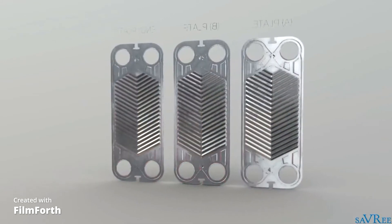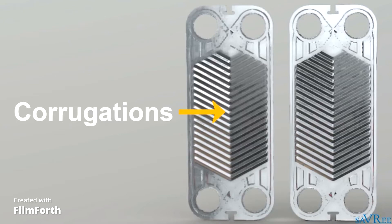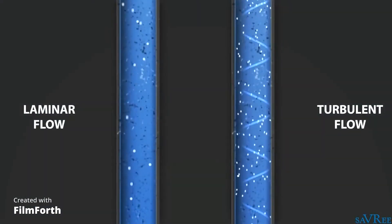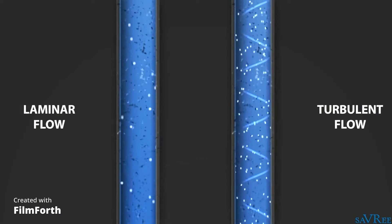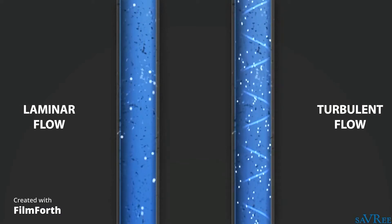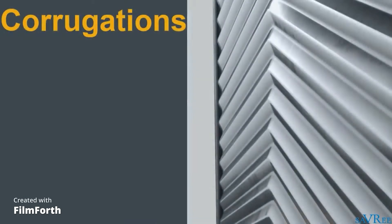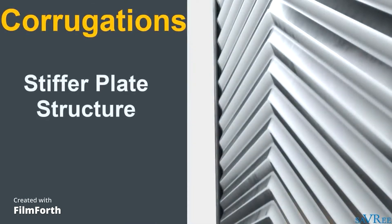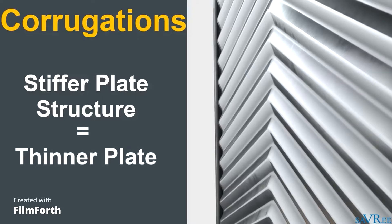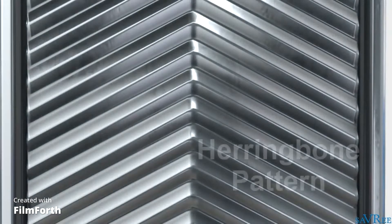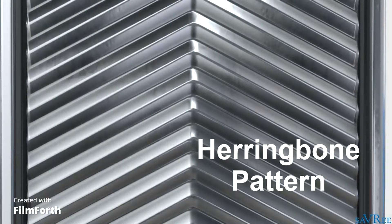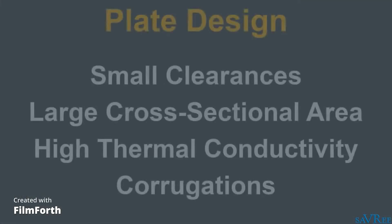Corrugations on the plate surfaces prevent laminar flow and promote turbulent flow, which increases the heat transfer rate whilst also reducing the likelihood of deposits accumulating on the plate surfaces. The corrugations also serve to stiffen the plate structure, which allows a thinner plate to be used compared to one with no corrugations. Note that plate corrugations are sometimes referred to as having a herringbone pattern. So although the plates look simple, a lot of engineering was applied to their design.